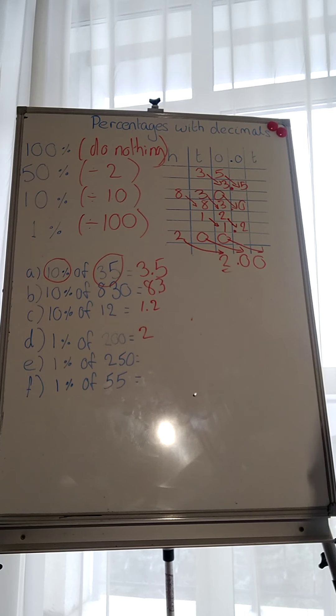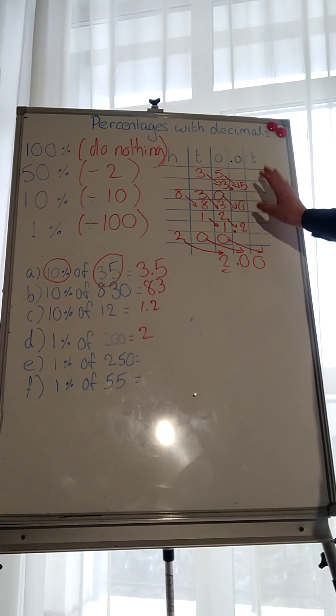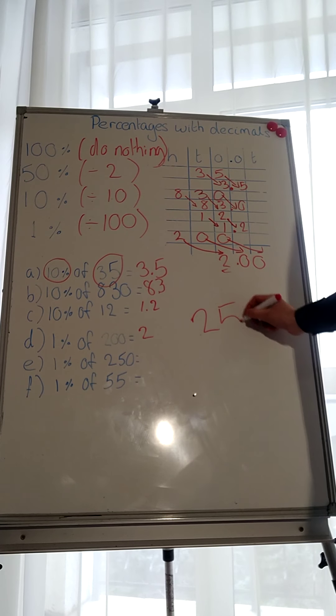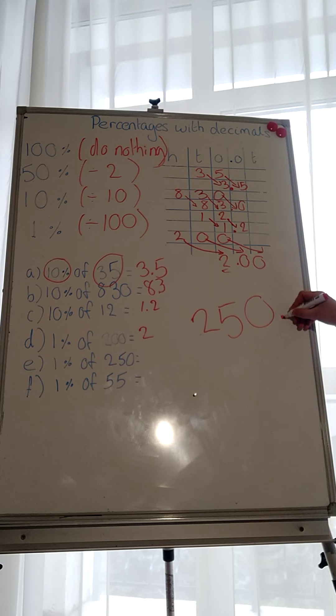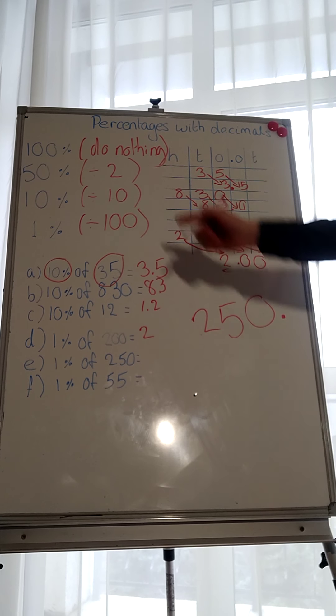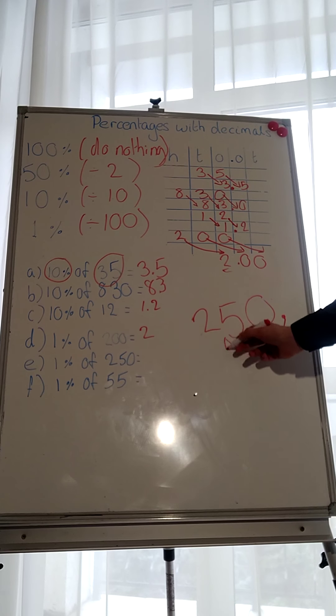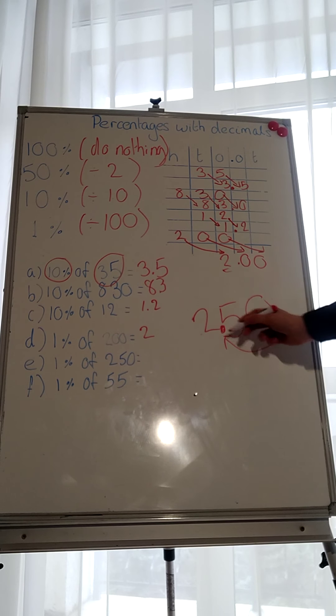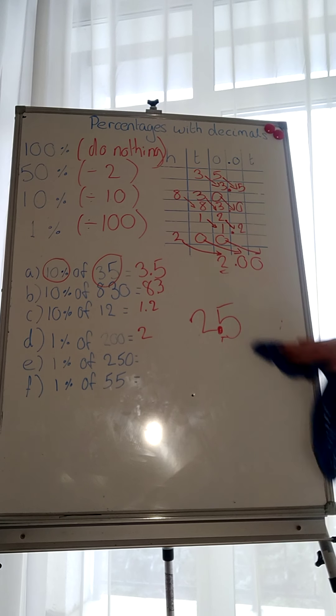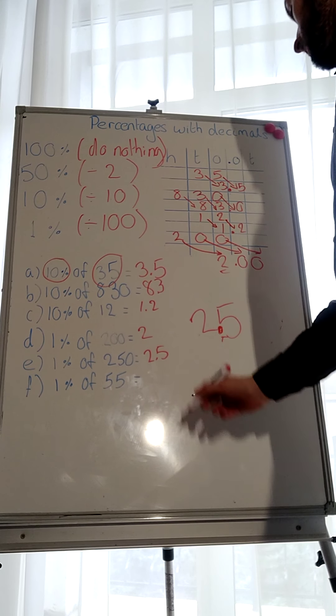Next one. E, 1% of 250. If you want to continue with the place value way, if that's easier for you, let's try it the simple way as well. 250. Now, remember, decimal point at the end, it's a whole number. 250. Where do we move it to? 1 or 2 across? Because we're dividing by 100. We're dividing by 100, so it just goes 2 across, which gives us 2.5.